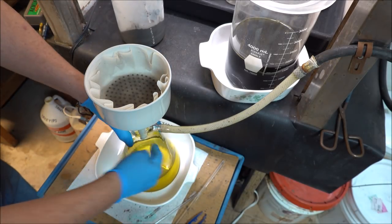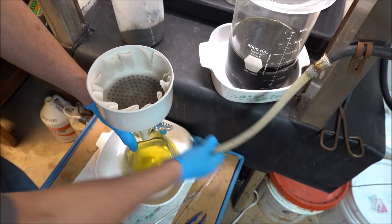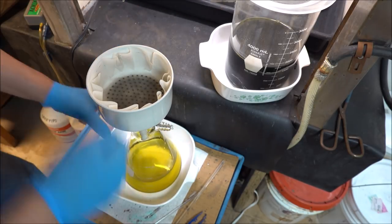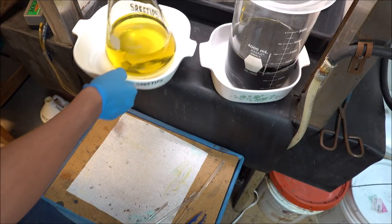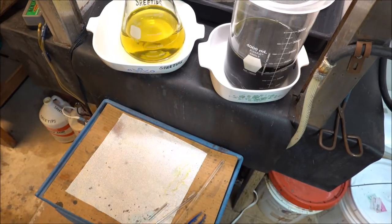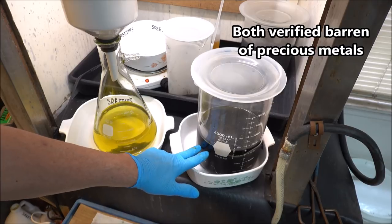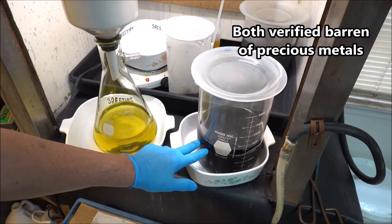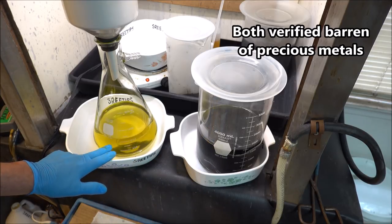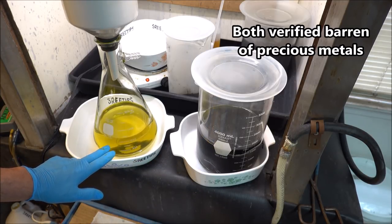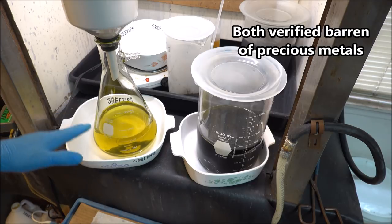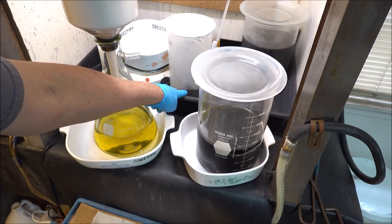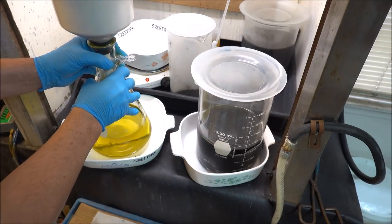I've got our fifth hydrochloric acid boil filtered off now. I want to set this up here so you can see the difference between the two solutions. This is the first four hydrochloric acid boils. Notice how dark the solution is. This is the fifth one. At least I can see through it. So now it should be clean enough to hit our ground up material with some aqua regia.